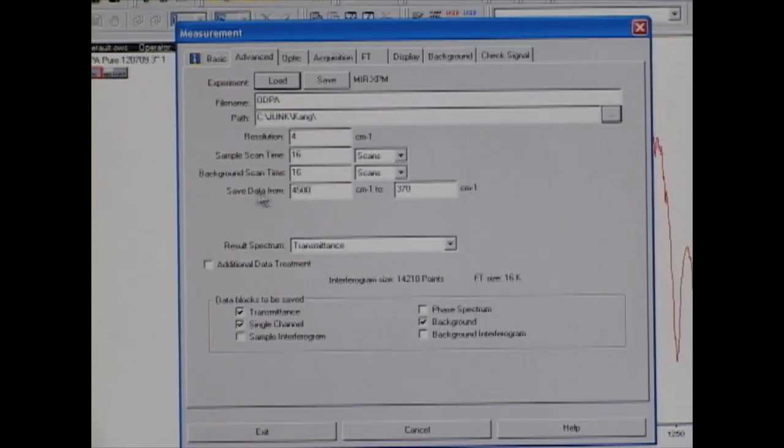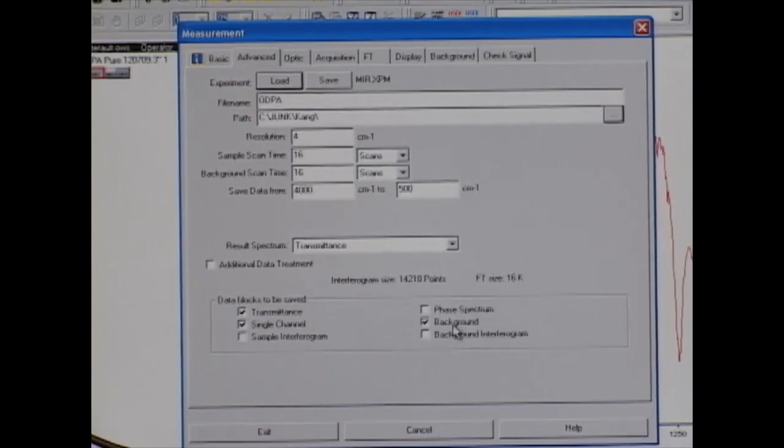Then we go to the Save Data box, which is the range of the spectrum that you want to scan. We want to scan from 4,000 to 500 cm inverse. Then we move on to the Result Spectrum and make sure it is on Transmittance. Then we move on to the Data Blocks to be Saved box, in which we want Transmittance, Single Channel, and Background to be checked.